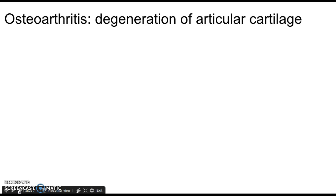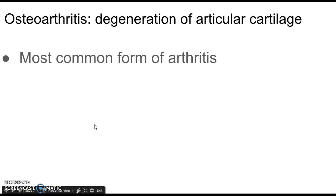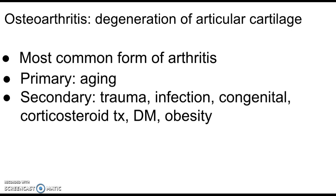The definition of osteoarthritis is degeneration of the articular cartilage. We can have primary and secondary osteoarthritis. It is the most common form of arthritis. Primary osteoarthritis is associated with aging. Secondary can occur as a result of trauma, infection, congenital defects, corticosteroid therapy, diabetes mellitus, or obesity.